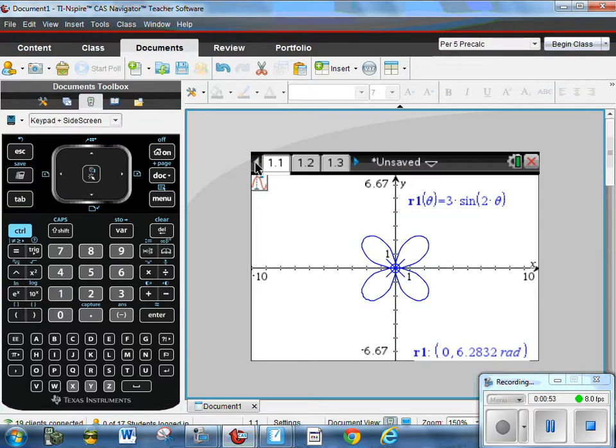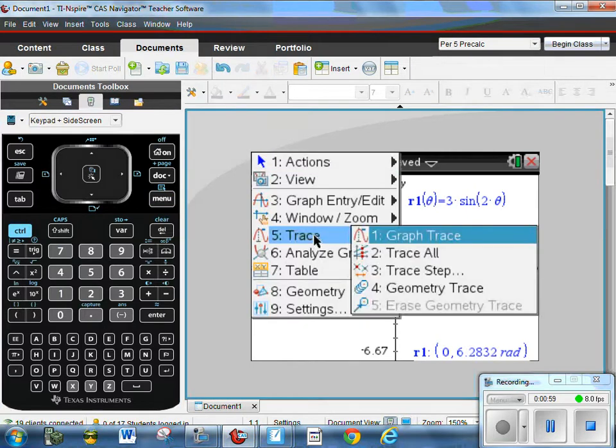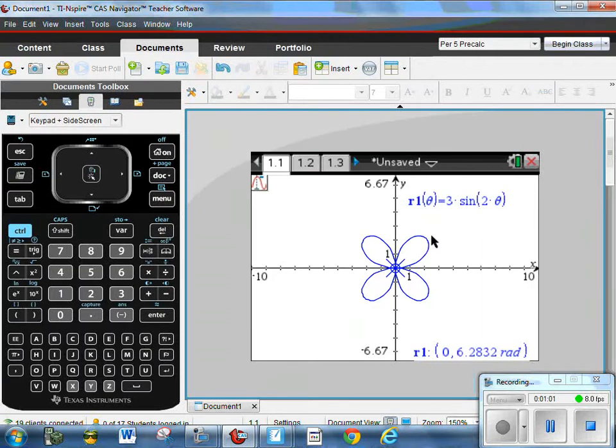So in polar form we'll graph this. We want to trace this and the way to trace it, remember menu, trace, graph trace, and then if you type in 0 and enter it will start tracing at 0 radians, which is what I want to do.